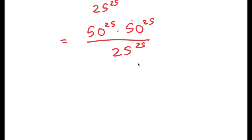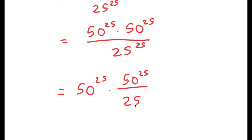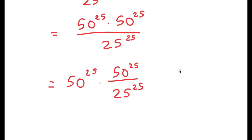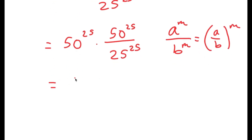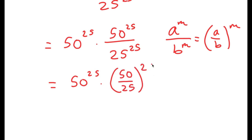I'm going to rewrite this as 50^25 times 50^25 over 25^25. Now I can use another property: if I have a^m over b^m, this is equal to (a/b) to the power of m. So this becomes 50^25 times (50/25)^25.